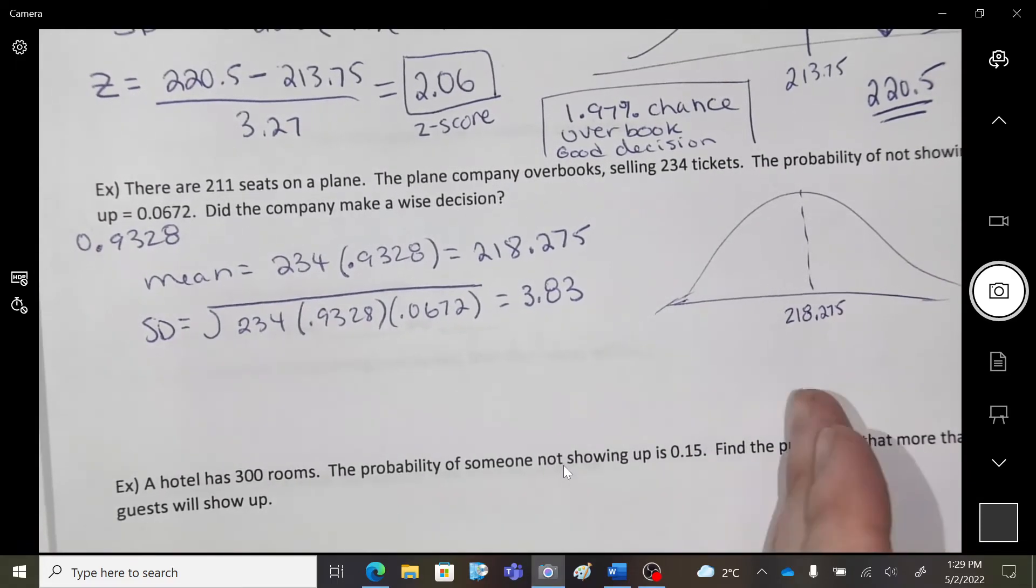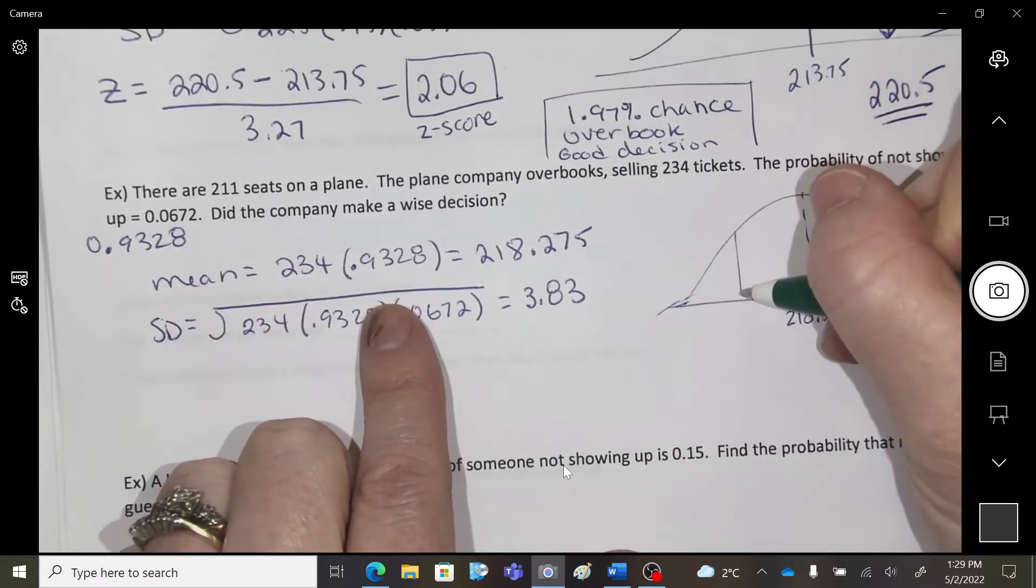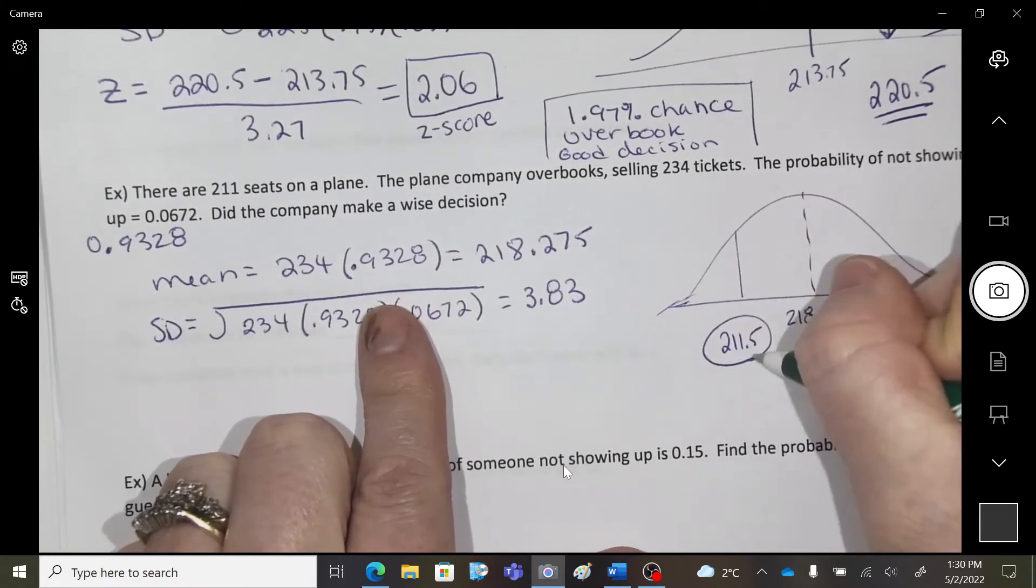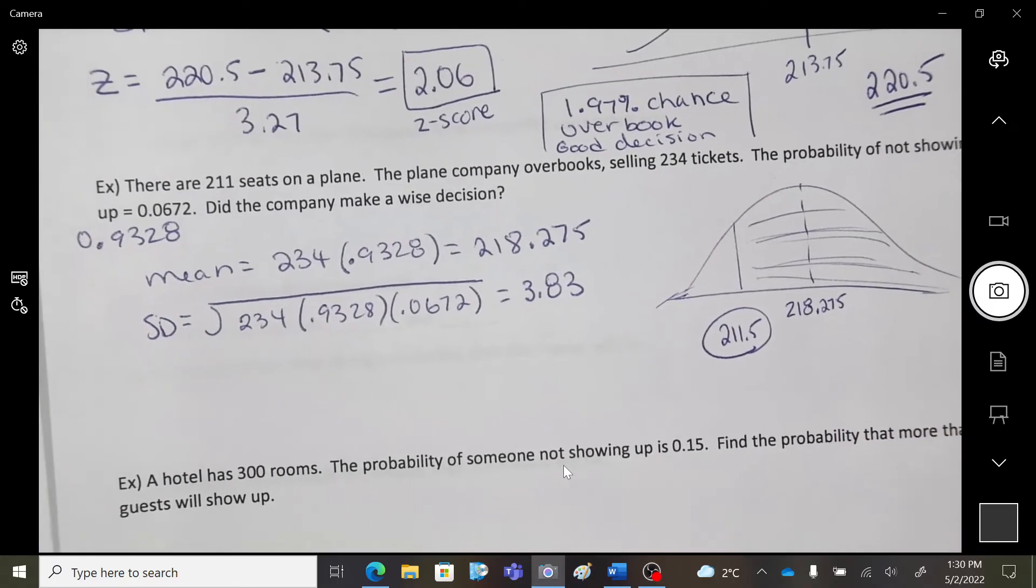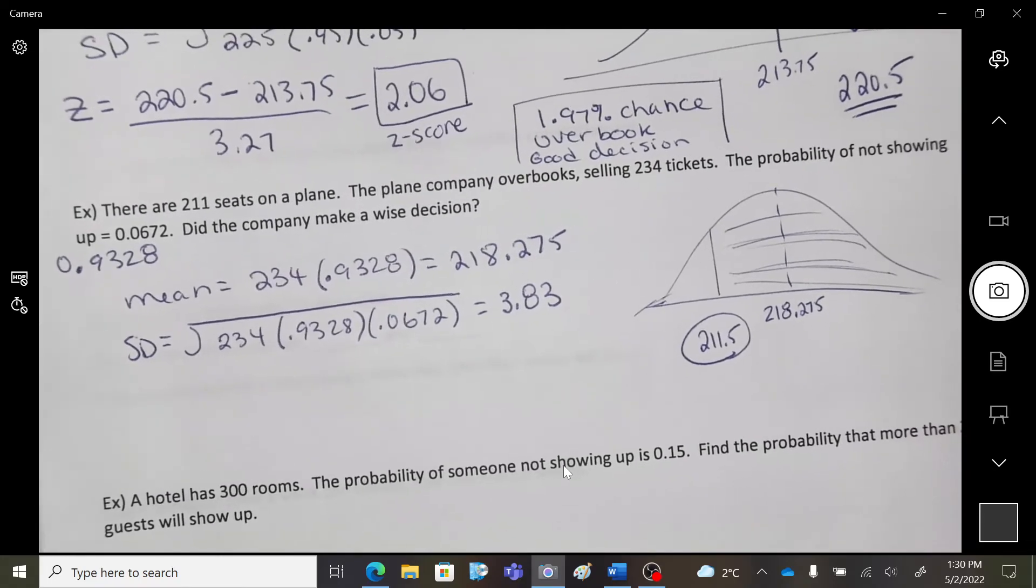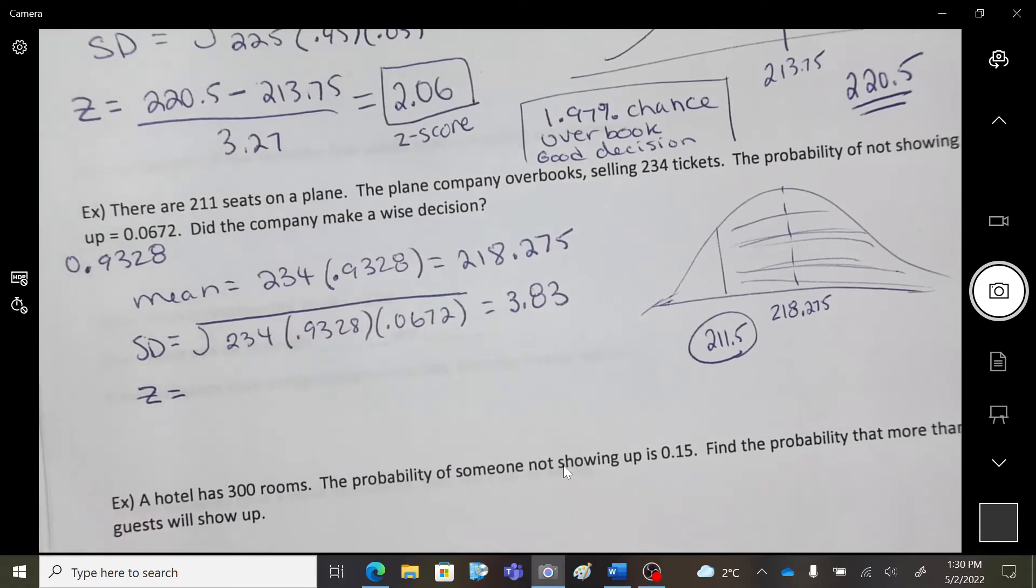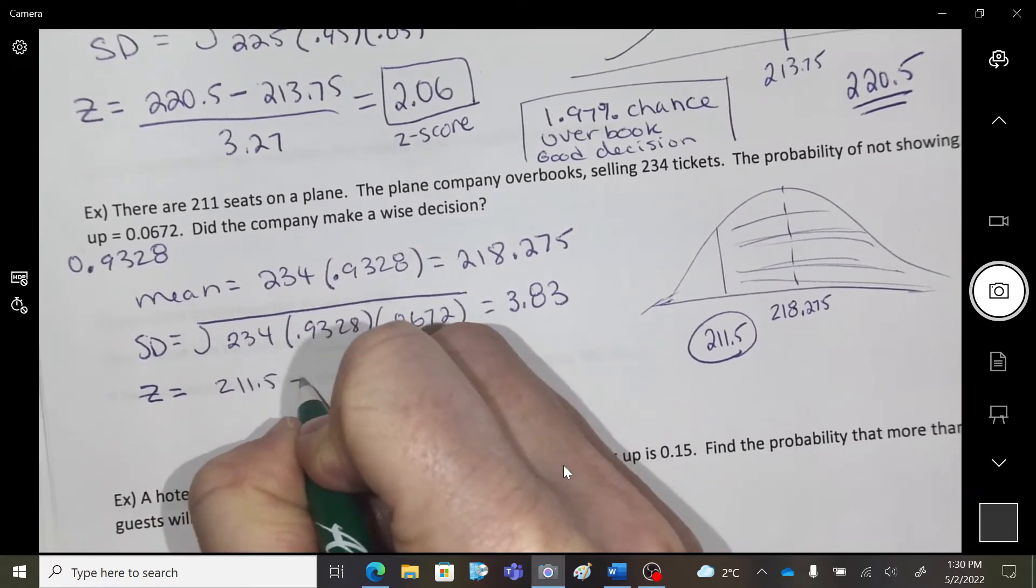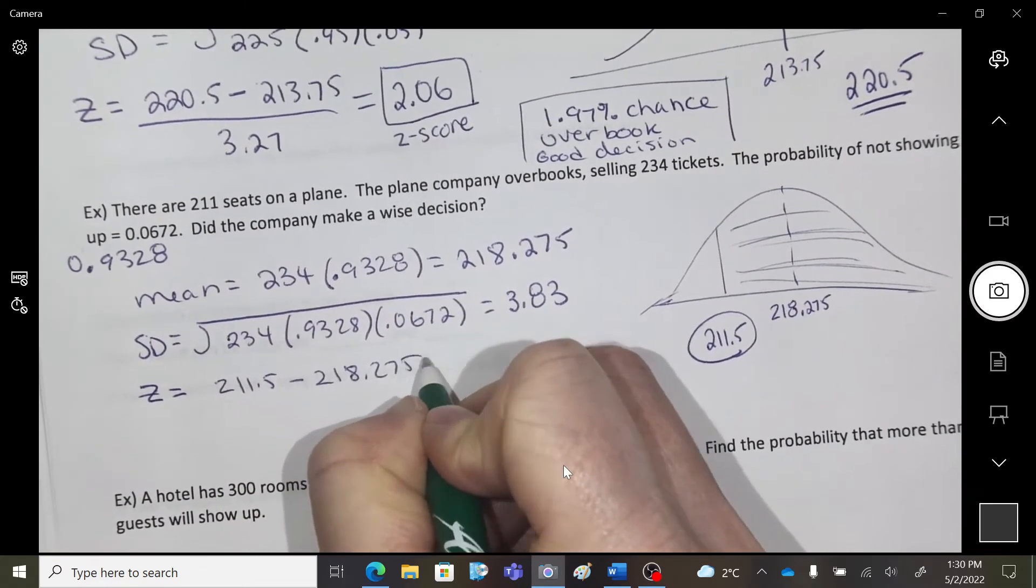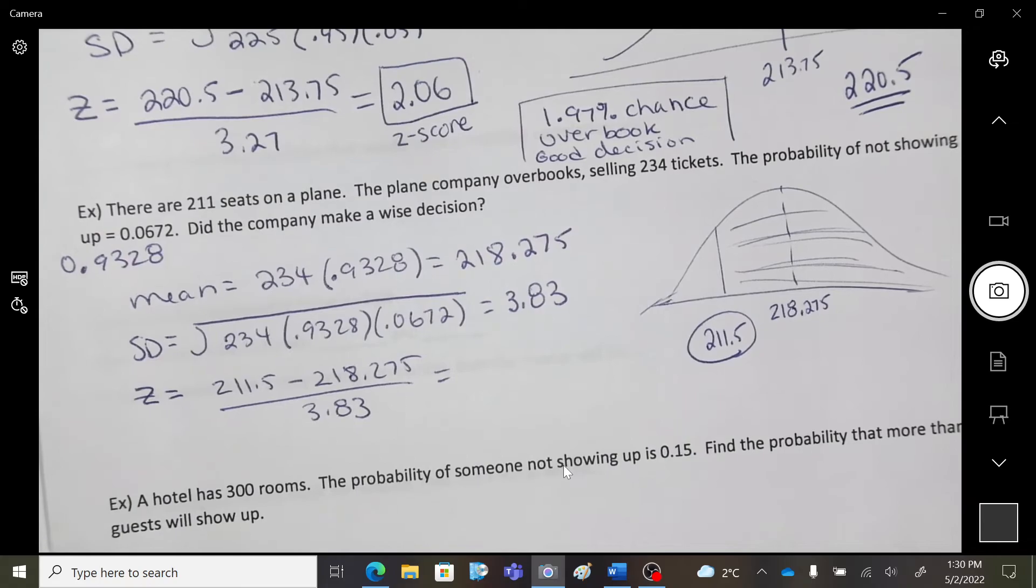Okay, so here's the mean, and we're worried about overbooking. So, if there's 211 seats, I'm worried about being anything over 211. This is the bad zone. I don't want to be in that zone, then I'm in trouble with my overbooks. Okay, so we're going to get a Z score. So, that would be where we are. So, 211.5 subtract mean over standard. Okay, that always gives me a Z score.